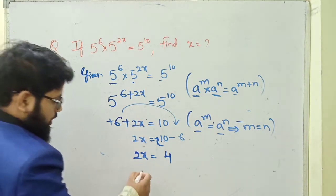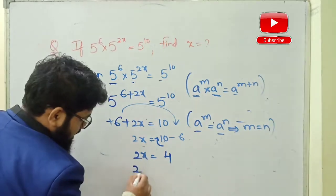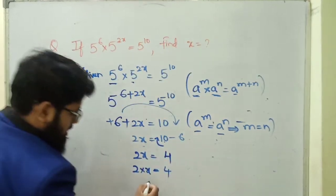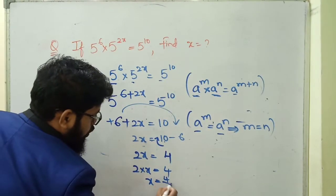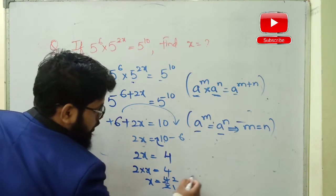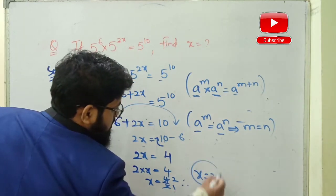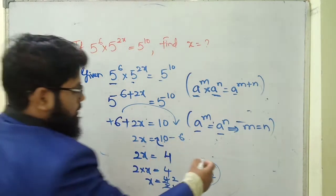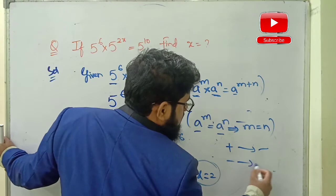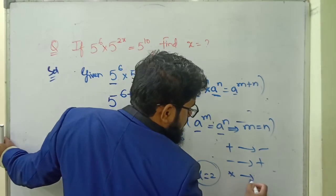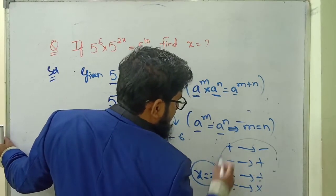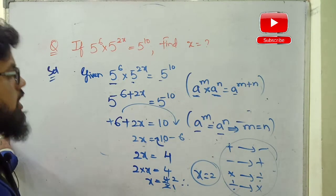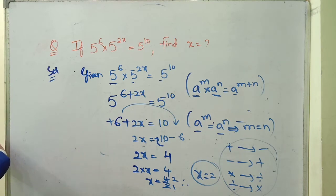Since bigger number sign is with 10, the answer is plus 4. So 2x = 4, which can be written as 2 into x = 4. Transposing 2 to RHS, x = 4 ÷ 2 = 2. So x equals 2 is the answer. To summarize the LHS/RHS rules: plus becomes minus, minus becomes plus, multiplication becomes division, and division becomes multiplication.